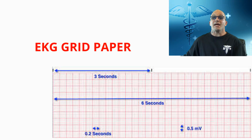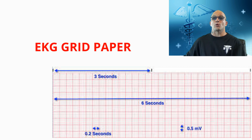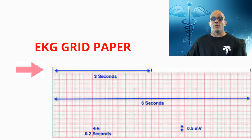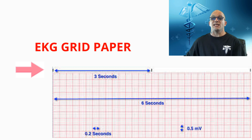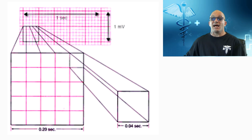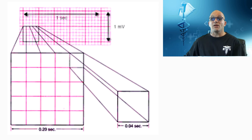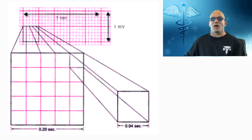The EKG waves are tracings recorded on grid paper. The horizontal axis of the EKG paper records time with black marks at the top of it. These marks indicate three-second intervals. Each second is marked by five large grid blocks, so there are 15 large blocks in three seconds, and each block equals 0.2 seconds.